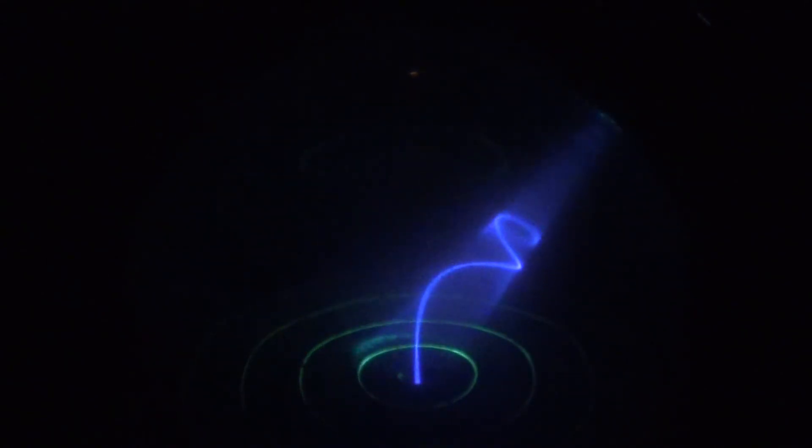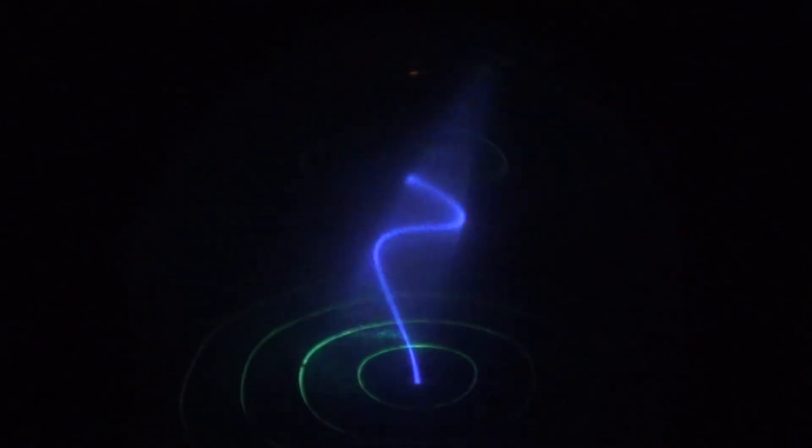Now we'll go off axis so that we get both horizontal and vertical components of the field interacting. You can see a nice pigtail form there.